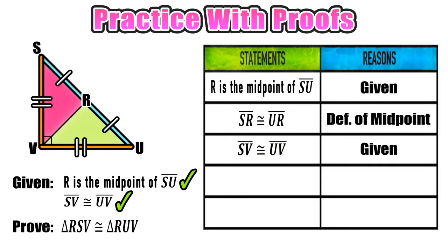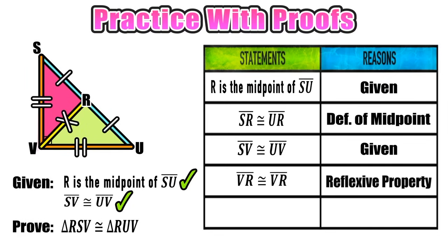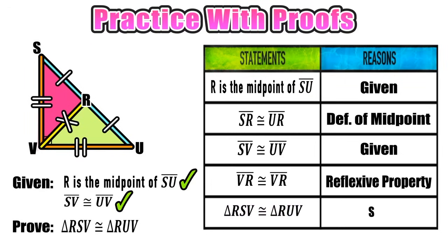With our givens used up, we apply what we already know. Both triangles share side VR, so whatever the length of VR is in the pink triangle RSV, it must be the same in the light green triangle RUV. We conclude that VR is congruent to itself by the reflexive property. We can now prove triangle RSV is congruent to triangle RUV using the Side-Side-Side postulate — each triangle has three pairs of corresponding congruent sides. Proof complete.